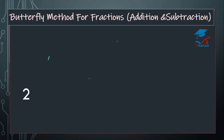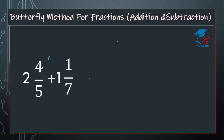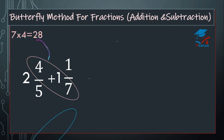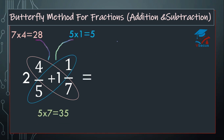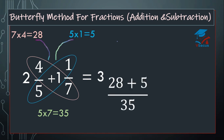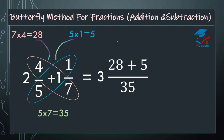Now let us go for mixed fractions: 2 and 4 over 5 plus 1 and 1 over 7. Forget the whole numbers. Multiply 4 and 7, that is 28. Multiply 5 and 1, that will become 5. Multiply the denominators, that is 35. Add the whole numbers together: 2 plus 1 is 3. So it will become 3 and 28 plus 5 over 35, which is 3 and 33 over 35. Since 33 over 35 is already in lowest term, your final answer is 3 and 33 over 35.